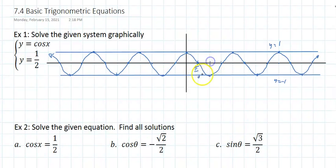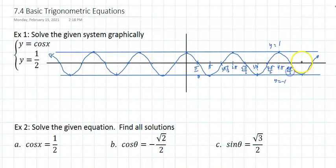Marking key x-values: π/2, 2π/2, 3π/2, 4π/2, 5π/2, 6π/2, 7π/2, 8π/2, 9π/2, 10π/2, 11π — the list goes on and never stops. This graph is going to run forever.